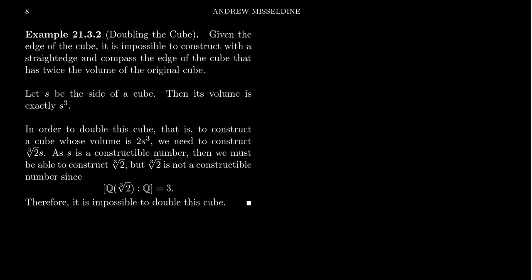When we think of a cube, we think of the following situation. We draw our picture of a cube like so. Suppose that this cube has a side length of s and that this is a constructible number. The volume of this cube would then be s³.